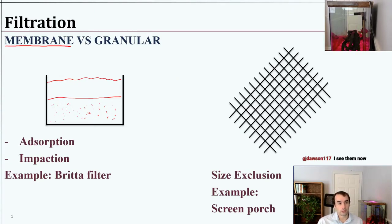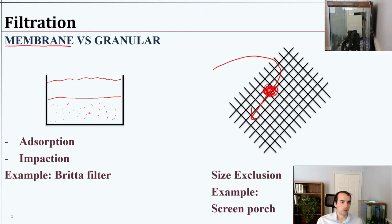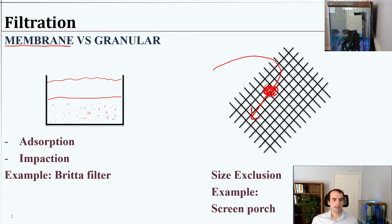The coffee grounds themselves you could consider as a granular media with absorption — actually desorption — where the coffee chemicals, caffeine, and flavors come off the grounds into the water. A window screen or screen porch prevents mosquitoes and particles from getting inside, but lets fresh air through. For water treatment, this means a particle gets stuck on the membrane surface because it's too large to pass through the pores. We're going to talk about the dynamics of membrane filtration, with size exclusion as the primary physical mechanism.